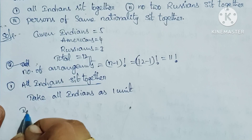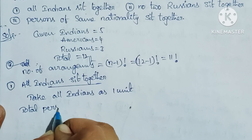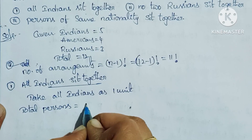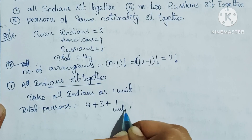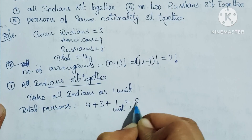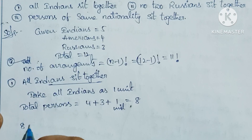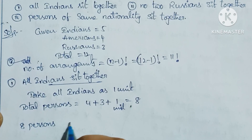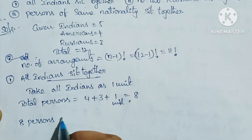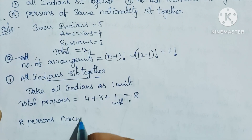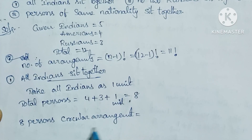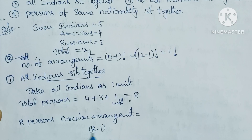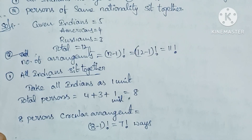Total persons now equal to 4 Americans + 3 Russians + 1 unit of Indians = 4 + 3 + 1 = 8 persons. For 8 persons in a circular arrangement, the formula is (n−1)! = (8−1)! = 7 factorial ways.